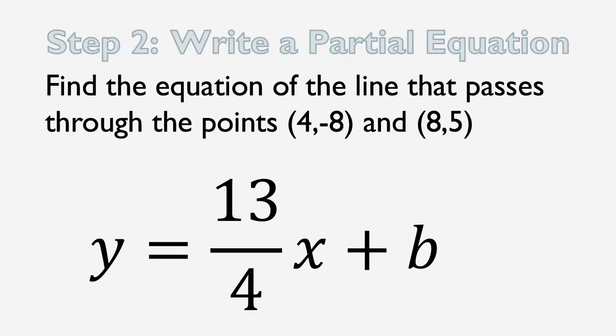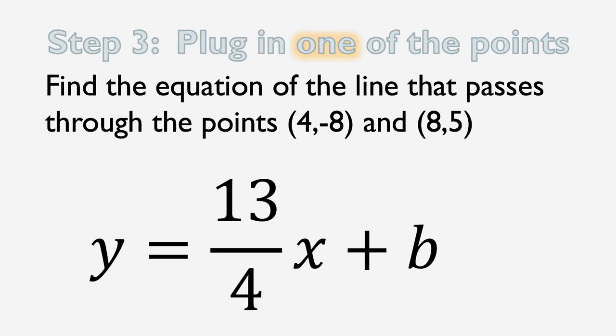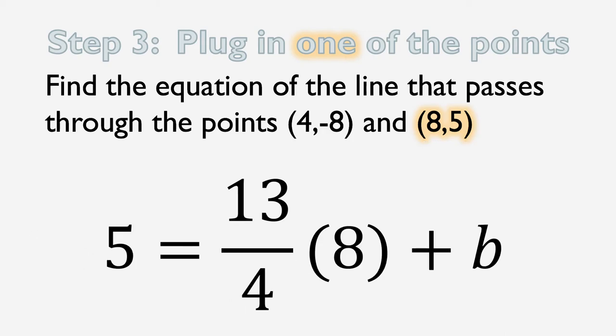So to do it algebraically, our next step is going to be taking either of the two points we're given, 4, negative 8 or 8, 5, and plugging them in. And I'm going to choose 8, 5 because both of those coordinates are positive. So remember, 8 is x and 5 is y. So 8 is going to get plugged into this x-slot and 5 is going to get plugged into the y-slot. So let's plug that in.